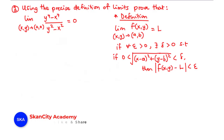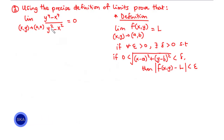In this lesson, we are going to solve some more examples on how to confirm the limit of functions of two variables. So, let's solve example 3. Using the precise definition of limits, we are going to prove that the limit of this function as (x, y) approaches (0, 0) is equal to 0.